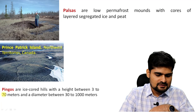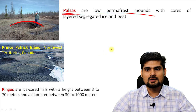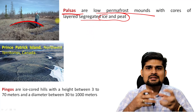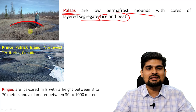Another feature is the mound called pulsas. Pulsas are low permafrost mounds — low mounds with cores of layered segregated ice and peat. Remember, ice and peat form a cool structure inside which creates a peat mound. This is an interesting structure found in permafrost areas, called pulsas.